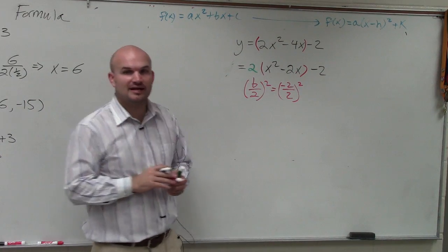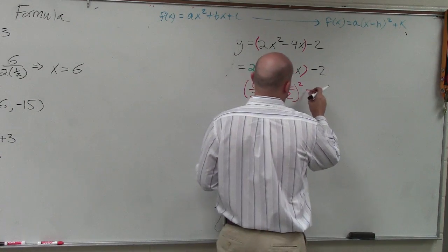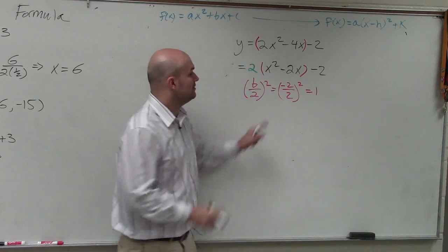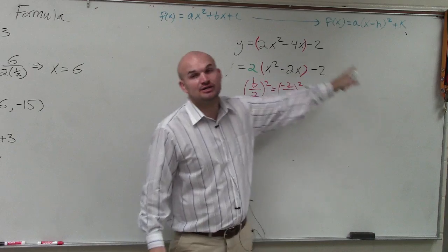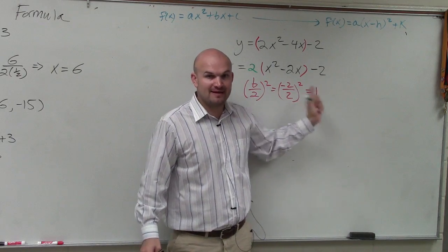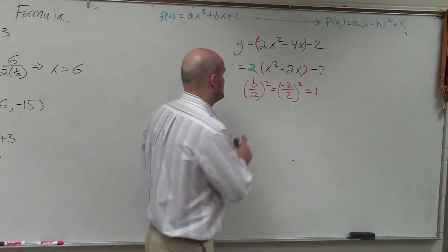Well, negative 2 divided by 2 is negative 1. Negative 1 squared is 1. Then we add and subtract. You add it inside the parentheses, and you subtract it outside. So you add that number inside to create a perfect square trinomial.